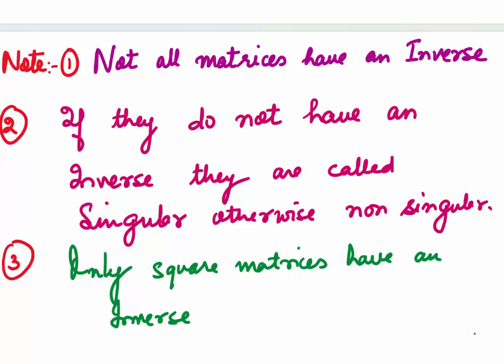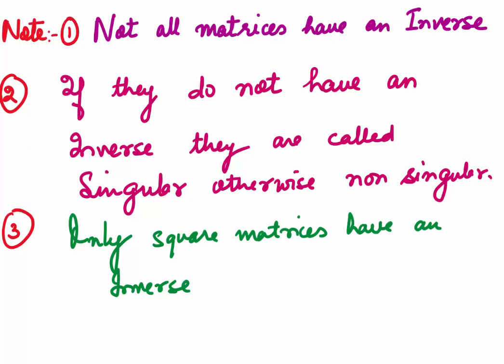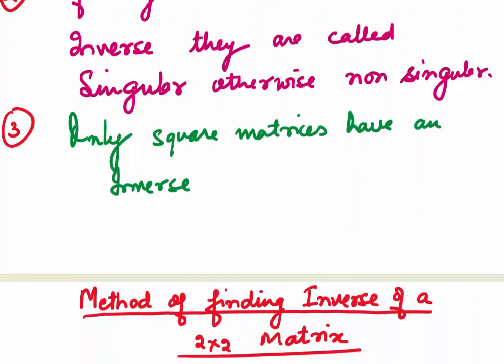Now, why do we find the inverse? There are many uses for finding the inverse. One of the main uses is for solving a system of equations. There are two common methods of finding the inverse: one is using elementary row transformations and the other is using determinants. As we haven't defined determinants yet, we will use the elementary row transformations method.